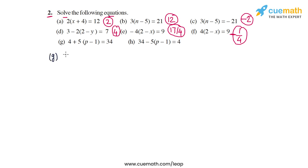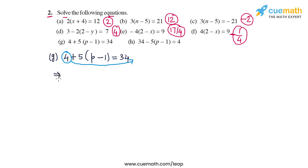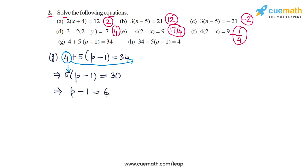In part g, the equation is 4 plus 5 times (t minus 1) is equal to 34. As the first step, transpose 4 to the right side to get minus 4, leaving 5 times (p minus 1) = 34 minus 4, or 30. Then divide both sides by 5, giving p minus 1 = 30 by 5, which is 6.